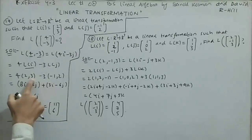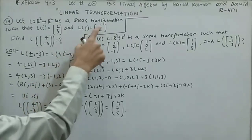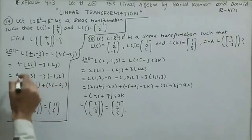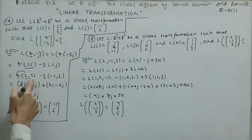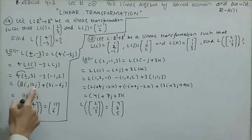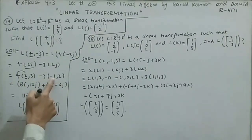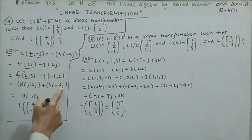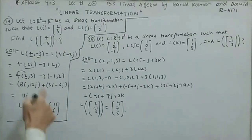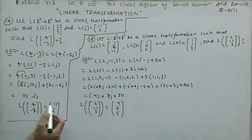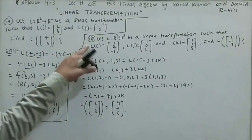Now L(i) = (2,3) and L(j) = (-1,2). Multiplying: 4·(2,3) gives 8i + 12j, and -3·(-1,2) gives +3i - 6j. Combining: 8i + 3i = 11i, and 12j - 6j = 6j. So the answer written as an ordered pair is (11, 6).